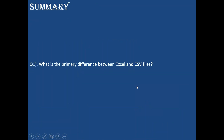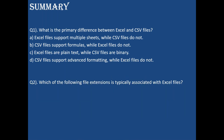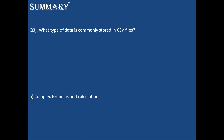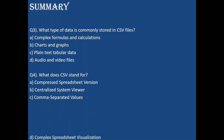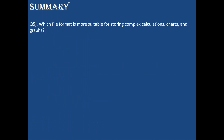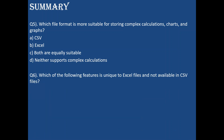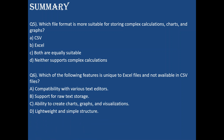Let's go through the summary questions. What is the primary difference between Excel and CSV? Excel supports multiple sheets while CSV files do not — option A is correct. Which file extension is associated with Excel files? The answer is .xlsx — option C is correct. What type of data is stored in CSV files? Plain text table of data — option C is correct. What does CSV stand for? Comma Separated Values — option C is correct. Which file format is best for complex calculations, charts, and graphs? Excel — and the feature unique to Excel not available in CSV is the ability to create charts, graphs, and visualizations — option C is correct.